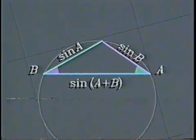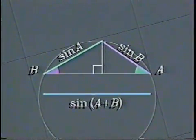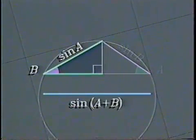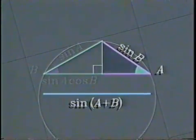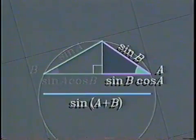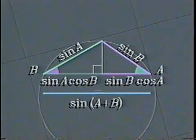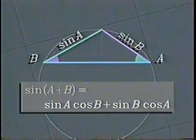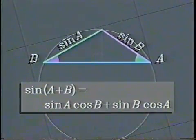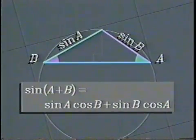To find the length of this chord another way, drop a perpendicular to the chord — it divides the triangle into two right triangles. The base of this right triangle is its hypotenuse times cosine B, and the base of this one is its hypotenuse times cosine A. Putting these together gives the addition formula for sines: the sine of A plus B equals sine A times cosine B plus sine B times cosine A. It tells us how to find the sine of a sum in terms of the sines and cosines of the individual parts.